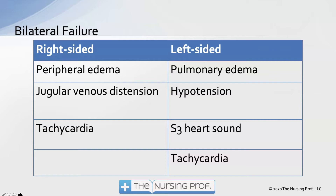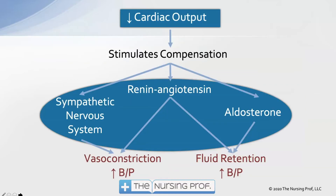In most cases, if the left side is involved, the right side eventually is going to be involved because we back up from the left side, through the lungs, through the right side, and into the peripheral system. However, if we're lacking pulmonary edema and we have peripheral edema, that really points more toward a right-sided type of failure.